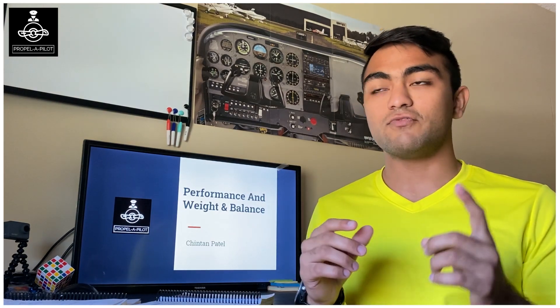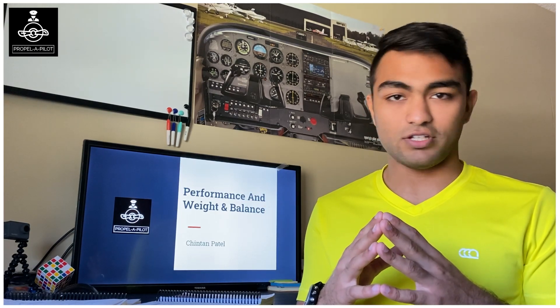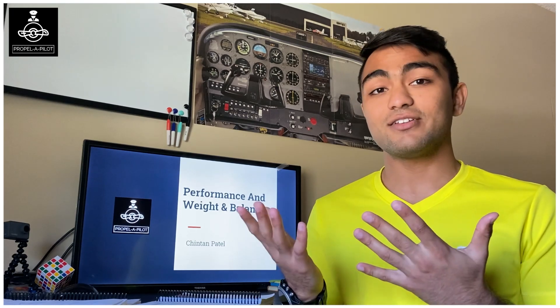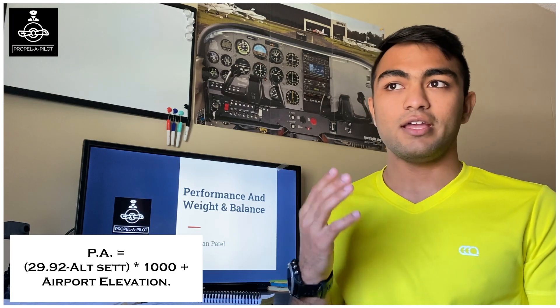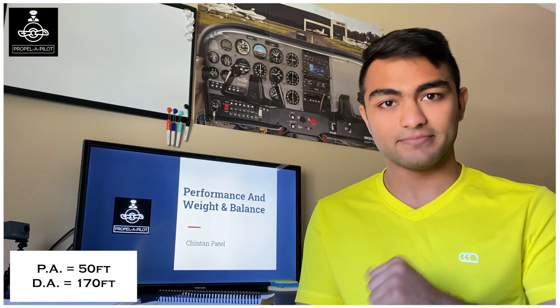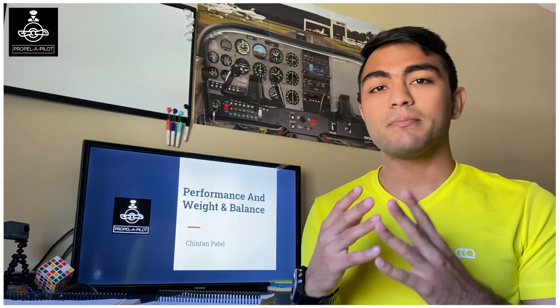Let's say an airplane has to depart from an airport with an elevation of 30 feet. Temperature is 16 degrees Celsius and the altimeter setting is 29.0 inches of mercury. Based on that, we calculate our pressure altitude and density altitude — which we discussed in our instrument rating course — and we get a pressure altitude of 50 feet and a density altitude of 170 feet MSL.